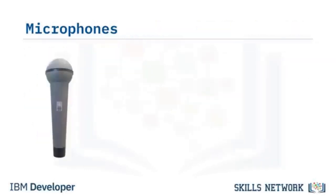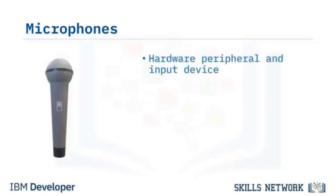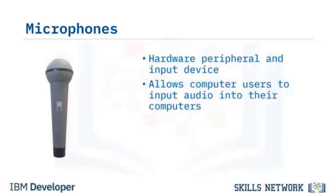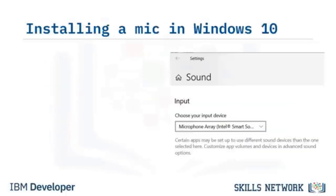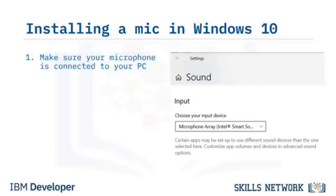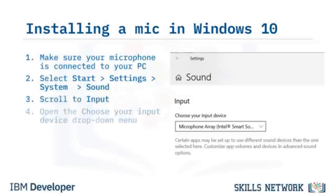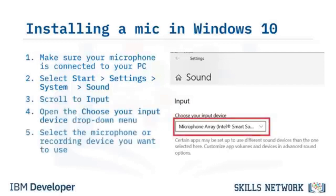A microphone, sometimes abbreviated as mic, is a hardware peripheral and input device that allows users to input audio into their computers. To install a new microphone in Windows 10: ensure it is connected, then select Start, Settings, System, and Sound. Scroll to Input, choose your input device, and select the microphone or recording device you want to use.